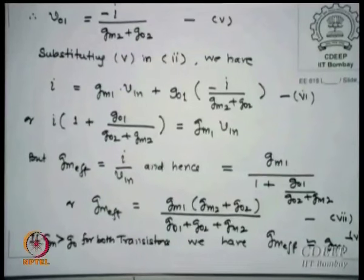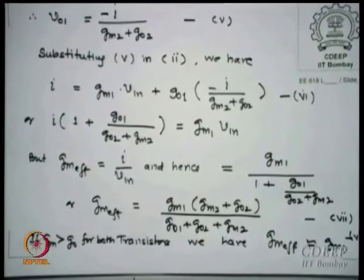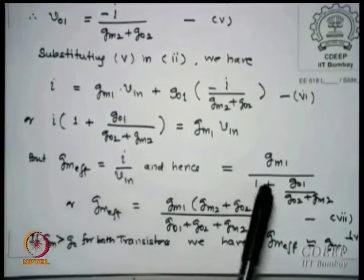The better method is to use an equivalent circuit and solve — nothing better than that. But I keep using this technique just to show how much difference there is going from single-stage to cascode. Collecting terms: I × (1 + Go1/(Go2 + Gm2)) = Gm1 × Vin. So Gm_effective = Gm1 × (Gm2 + Go2) / (Go1 + Go2 + Gm2).